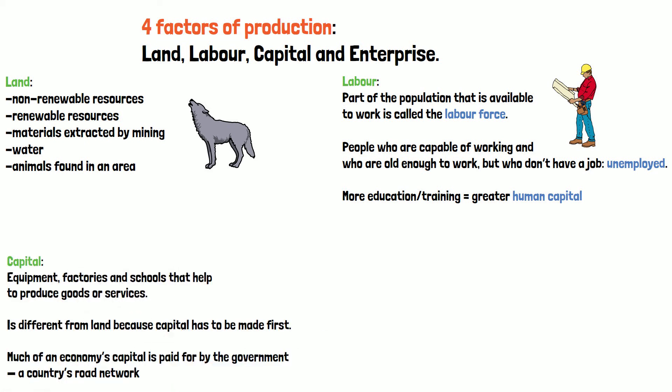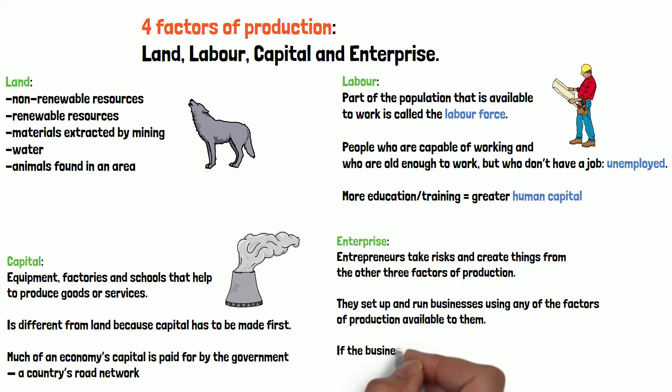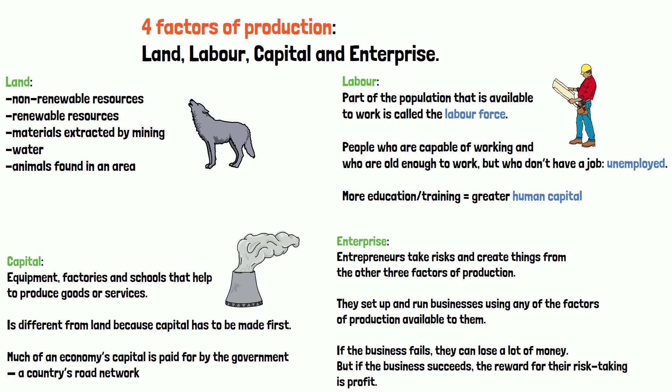Capital is the equipment, factories, and schools that help to produce goods or services. Capital is different from land because capital has to be made first. Much of an economy's capital is paid for by the government, such as a road network. Finally, enterprise refers to the people — entrepreneurs — who take risks and create things from the other three factors of production. They set up and run businesses using any of the factors of production available to them.